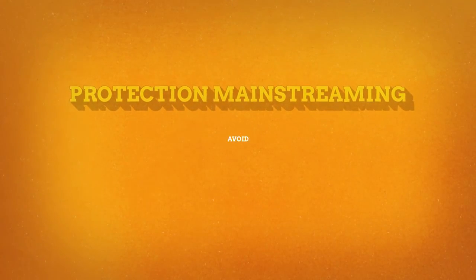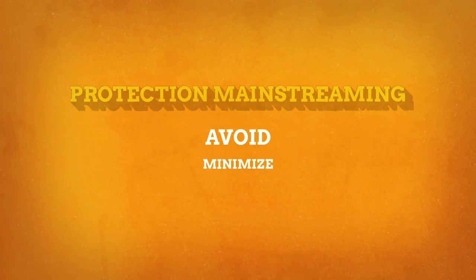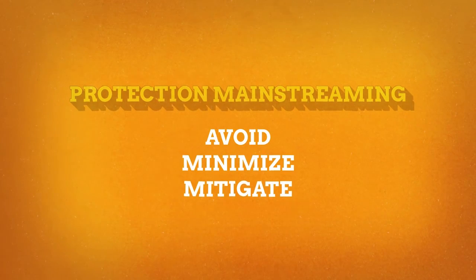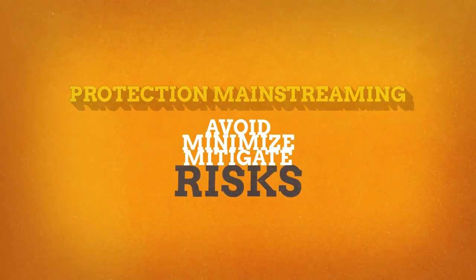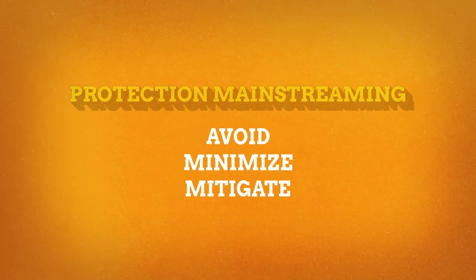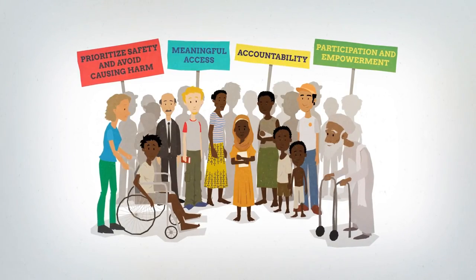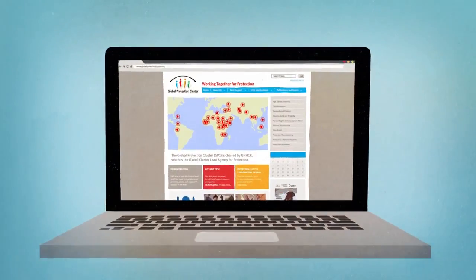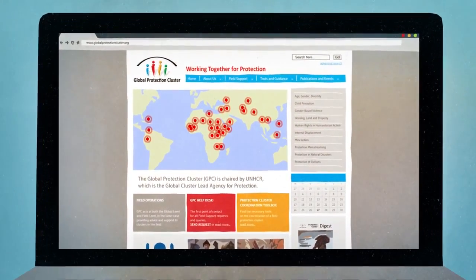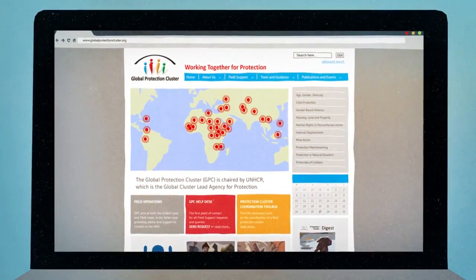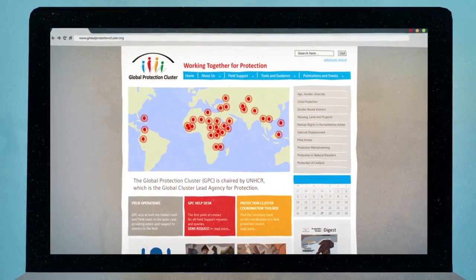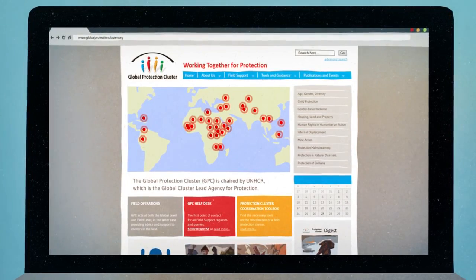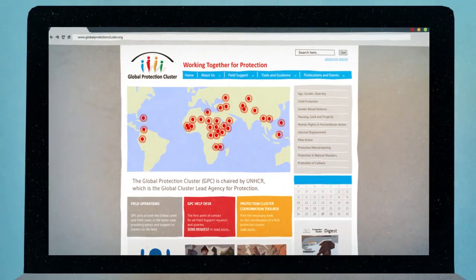Protection mainstreaming aims to avoid, minimise and mitigate the risks associated with the delivery of humanitarian assistance. Our roles might be different, but protection is everyone's responsibility. The Global Protection Cluster can provide resources to help you effectively mainstream protection into humanitarian assistance.